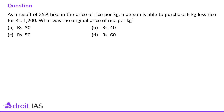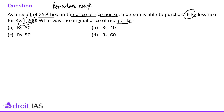Next question: as a result of a 25% hike in the price of rice per kg, a person is able to purchase 6 kg less rice for Rs. 1200. What was the original price of rice per kg? This question belongs to percentage — specifically percentage compensation. 25% of 1200 is one-fourth, which is Rs. 300. So today there is a hike of Rs. 300 with respect to Rs. 1200.